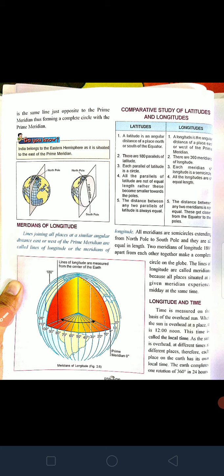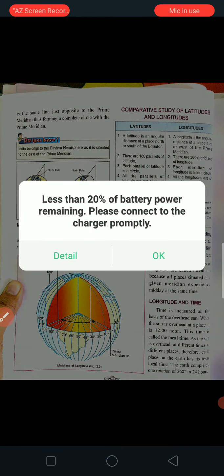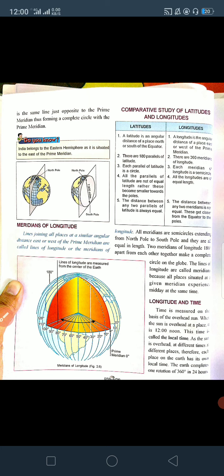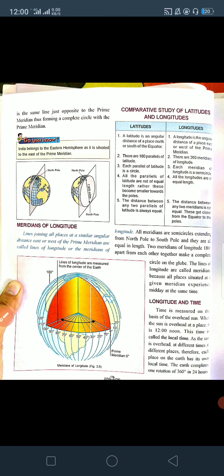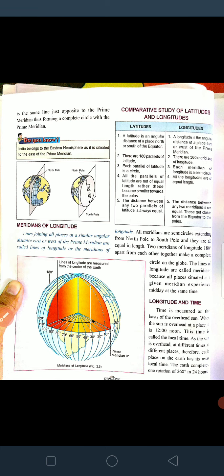All meridians are semicircles, whereas latitudes are whole circles. Two meridians of longitudes 180 degrees apart from each other together make a complete circle on the globe — for example, 180 degrees and 0 degrees longitude, which are 180 degrees apart, form one complete circle. All meridians are semicircles extending from the north pole to the south pole, because these are vertical lines.